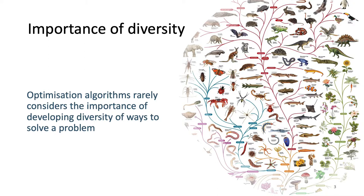One core idea behind quality diversity algorithms is the importance of diversity. Most optimization algorithms focus on finding a unique solution to a problem, but developing different and diverse ways to solve a problem is a powerful tool, as the coexistence of multiple solutions allows to face and recover from unexpected events and damage, but also to find stepping stones toward alternative complex solutions that cannot easily be found with a direct optimization process.